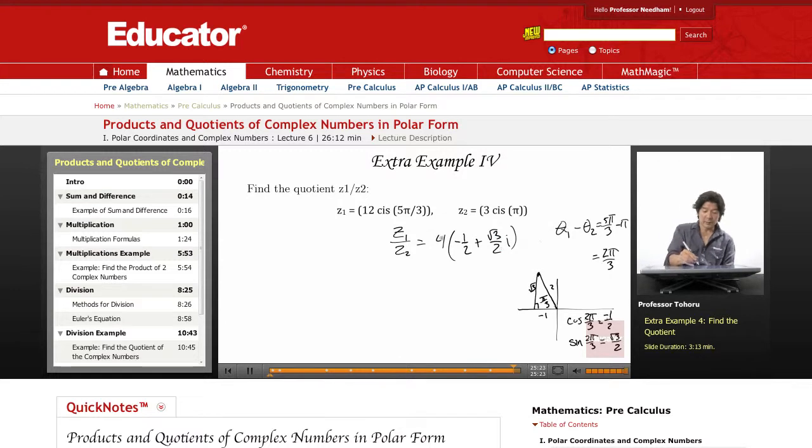Now I'm distributing across. This becomes negative 2. Plus 2 root 3. And that's a nice-looking quotient there, if I do say so myself. Negative 2 plus 2 root 3i.